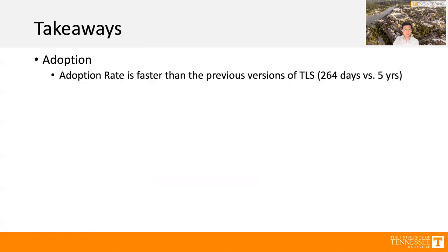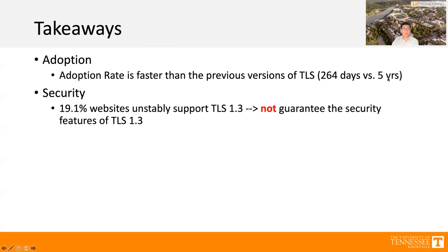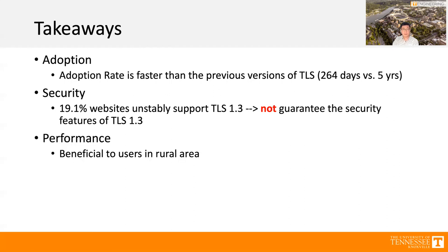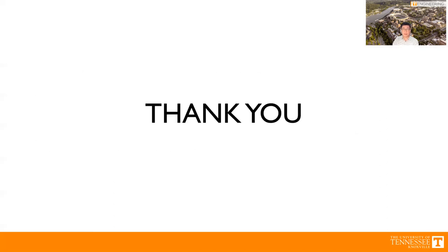Here are the takeaways. In terms of adoption, adoption rates for TLS 1.3 are faster than previous TLS versions — around 300 days to reach 50% adoption rate versus five years for TLS 1.2. In terms of security, around 90% of websites have unstable TLS 1.3 support, meaning security features of TLS 1.3 are not guaranteed. In terms of performance, TLS 1.3 is beneficial for servers and users in areas that don't utilize CDN servers. Thank you so much.